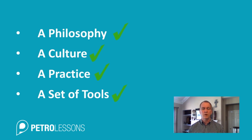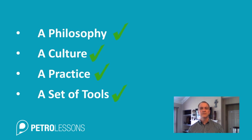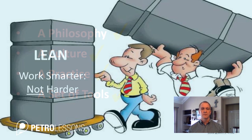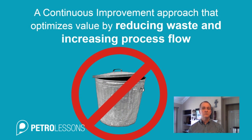Actually, it's all of these. It's a holistic approach to changing your culture and changing how people view their work and address issues — to go from firefighting to being proactive and taking care of problems. Lean is about working smarter, not harder. It's a continuous improvement approach that optimizes value by reducing waste. Elimination of waste is the key aspect of lean, so you can improve the flow of processes through your organization.